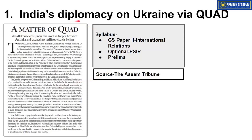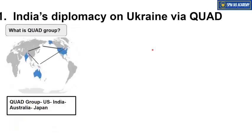The first article is about India's diplomacy on Ukraine via Quad. This article is very complex — we will discuss India's current approach on the Russia-Ukraine war and how India is trying to consolidate its position. This article is very important from the GS Paper 2 International Relations perspective, and also for optional students having PSIR as their optional subject.